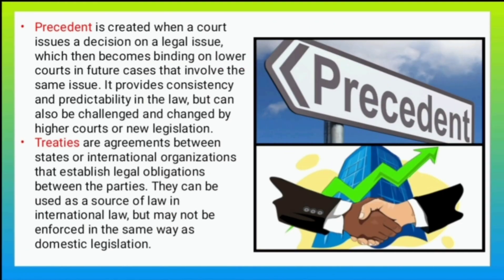Precedent is created when a court issues a decision on a legal issue, which then becomes binding on lower courts in future cases that involve the same issue. It provides consistency and predictability in the law, but can also be challenged and changed by higher courts or new legislation. Treaties are agreements between states or international organizations that establish legal obligations between the parties. They can be used as a source of law in international law, but may not be enforced in the same way as domestic legislation.